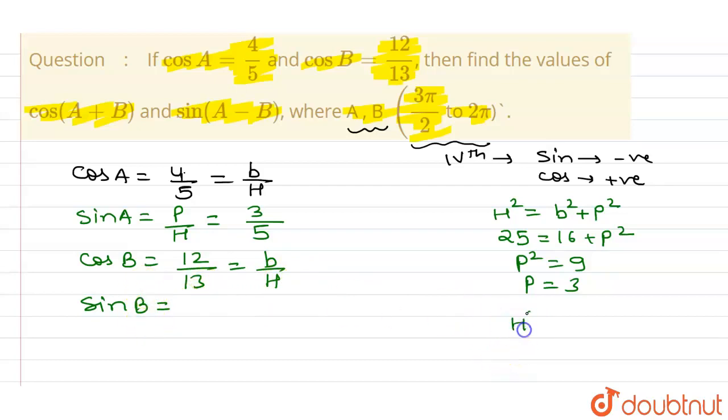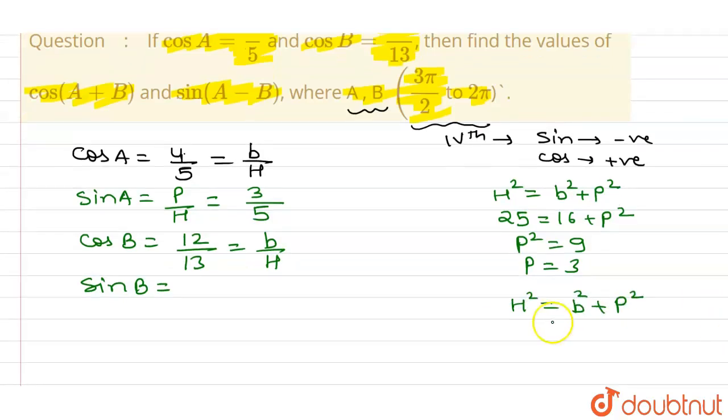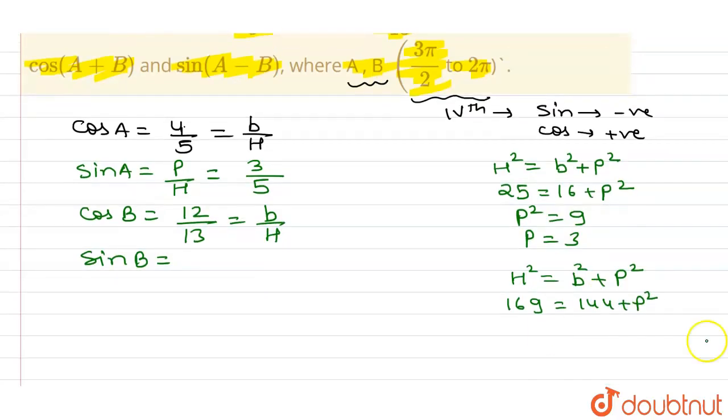So here H is 13, and 13² is 169, which equals B². B is 12, so 12² is 144 plus P². So P² equals 169 minus 144, that value is 25, so P equals 5. And we know that sin value is P/H, which is here P is 5, so I can write it as 5/13.